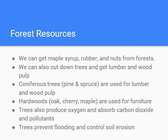Our first topic is forest resources. From trees we get things like maple syrup, rubber, and nuts — things we don't necessarily need to cut the tree down to receive. But you can also cut down trees and get lumber and wood pulp. Wood pulp can be used to make plywood or paper among other things.